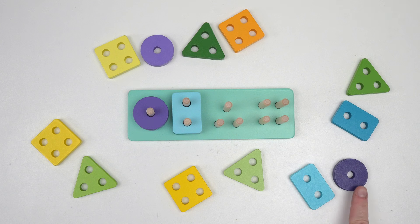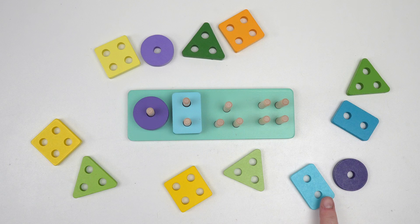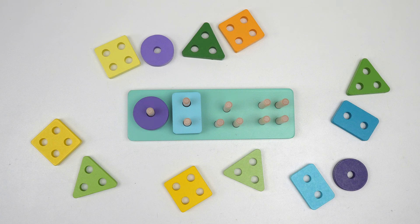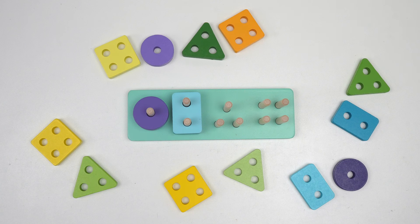We already know the circle had one hole. The rectangle had two holes and the square has four holes. So what shape does that leave? Yes!